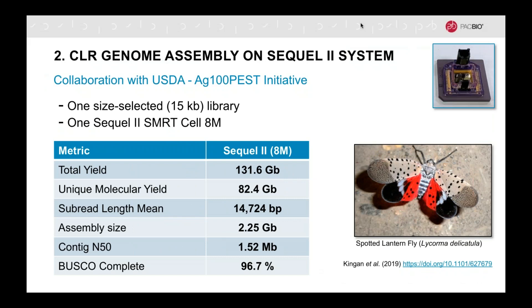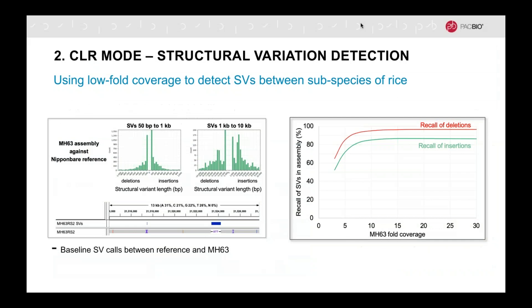More recently, in collaboration with the USDA Ag 100 Pest Initiative — which seeks to sequence insects and arthropods that are pests on important agricultural crops — we released the first genome assembly generated with Sequel II data. We sequenced a size-selected library on one Sequel II SMRT cell and were able to assemble the 2.25-gigabase genome of the spotted lanternfly, an invasive insect decimating wine and pine farms in the northeastern United States.